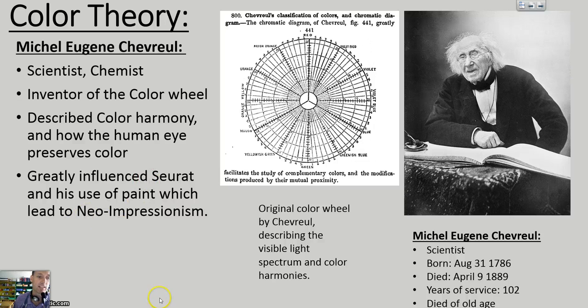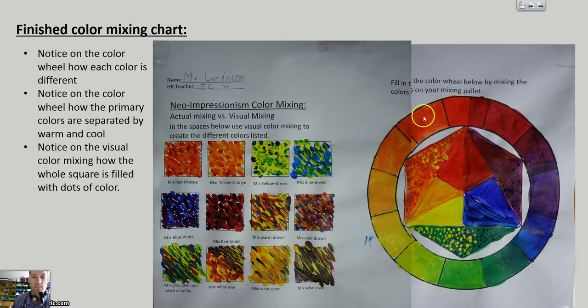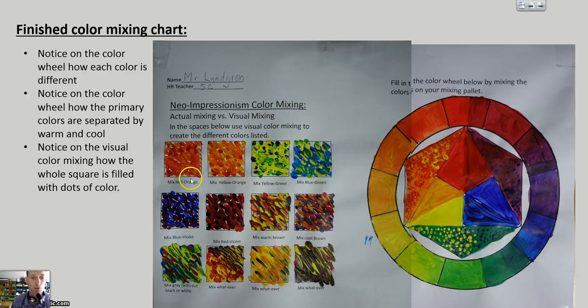Today, as we start our neo-impressionism project, we're going to be looking at this color wheel — mixing a variety of colors. We're going to mix primaries, secondaries, and intermediate or tertiary colors. Then we're going to use the neo-impressionism style by making little dots in squares to create the red-orange mixes, yellow-orange mixes, and other tertiary colors. We'll look at that in our next video when we start actually mixing our colors. And that is all about neo-impressionism artwork.